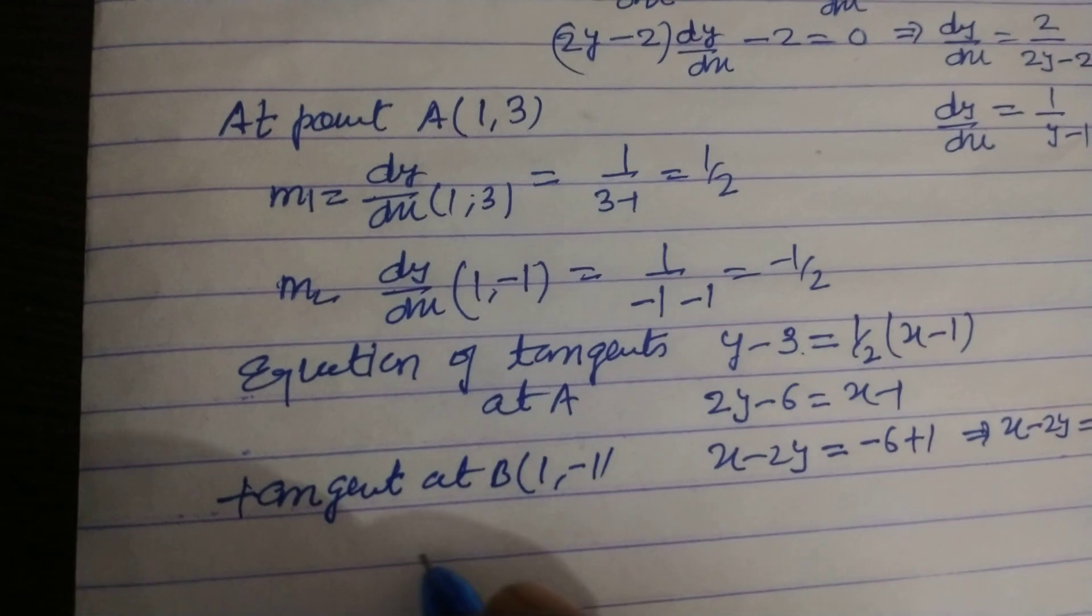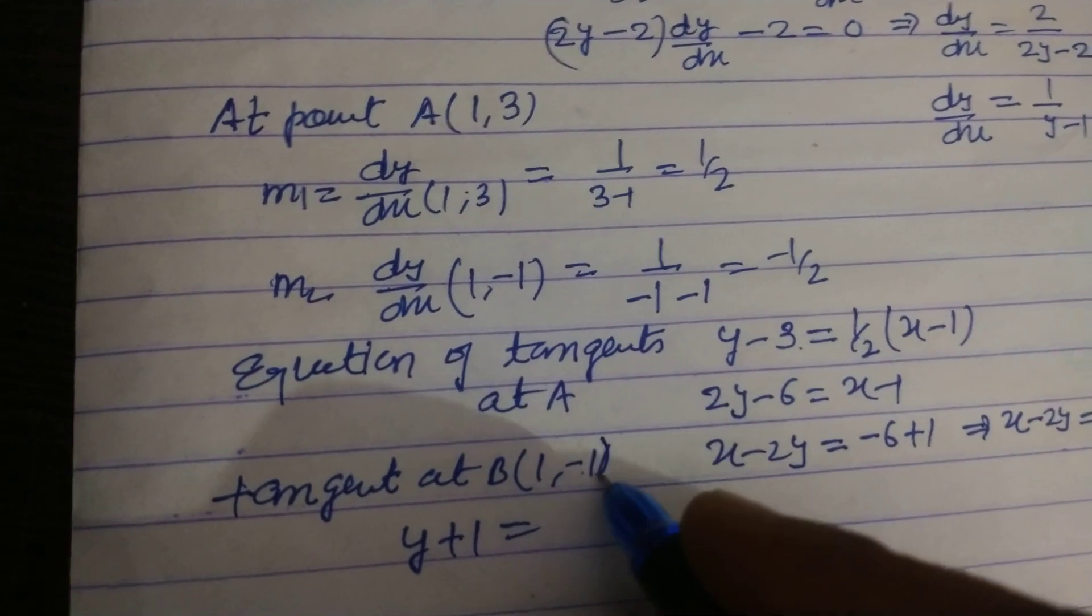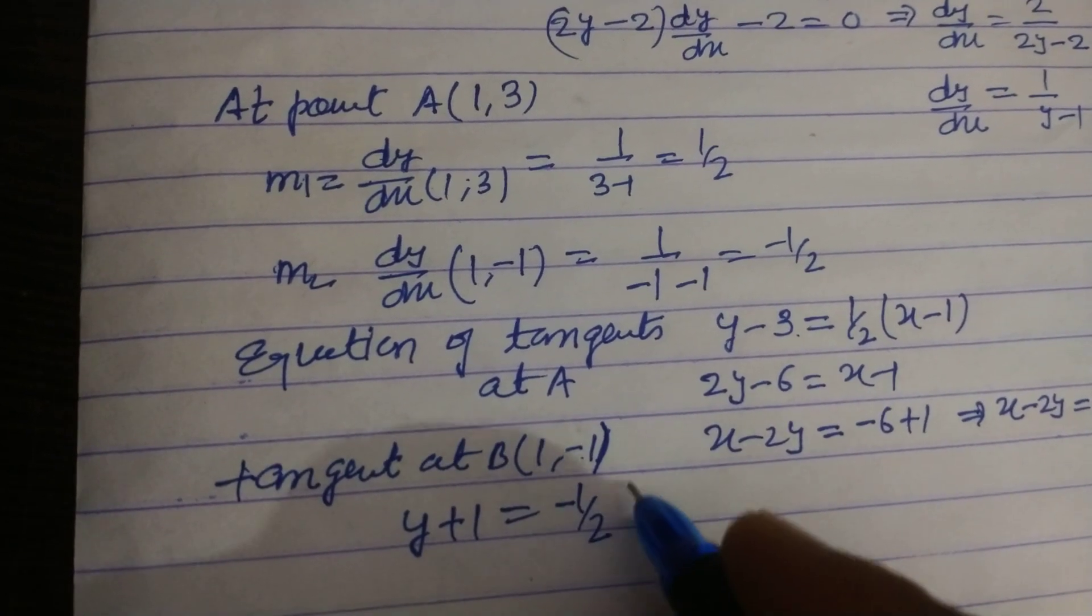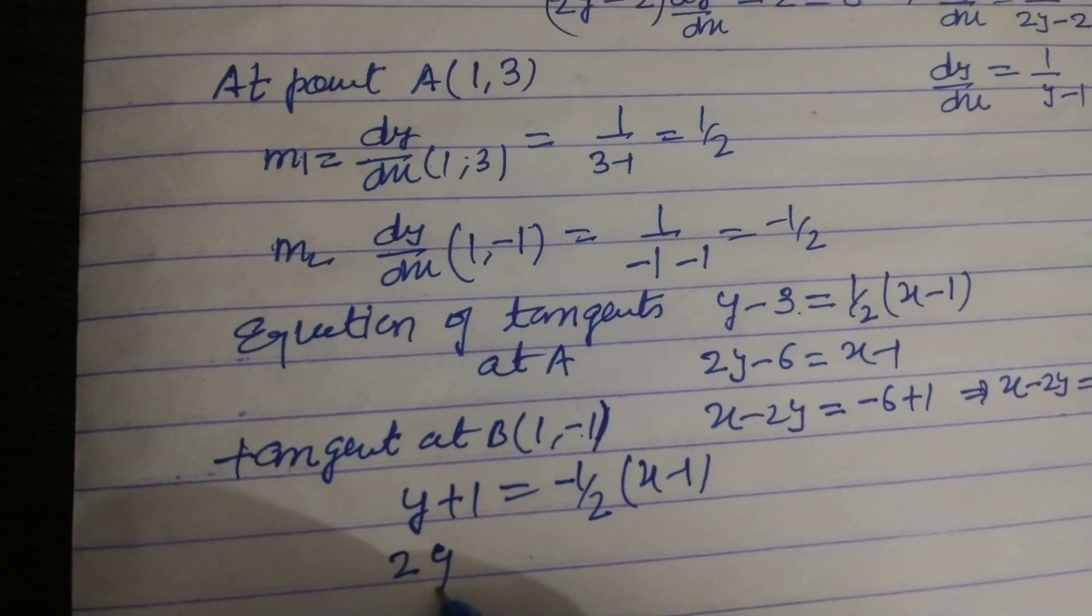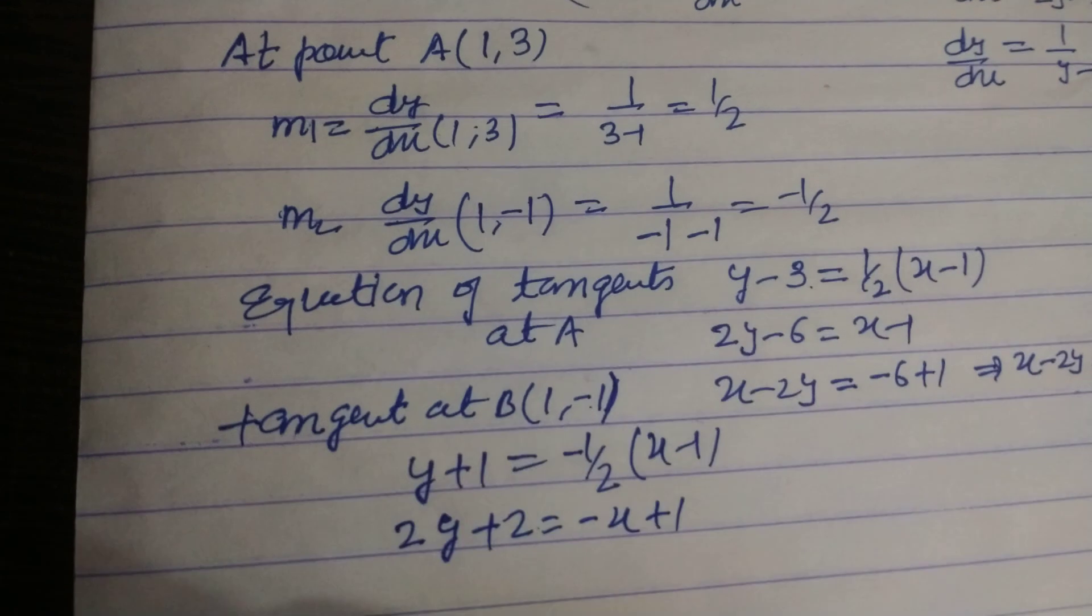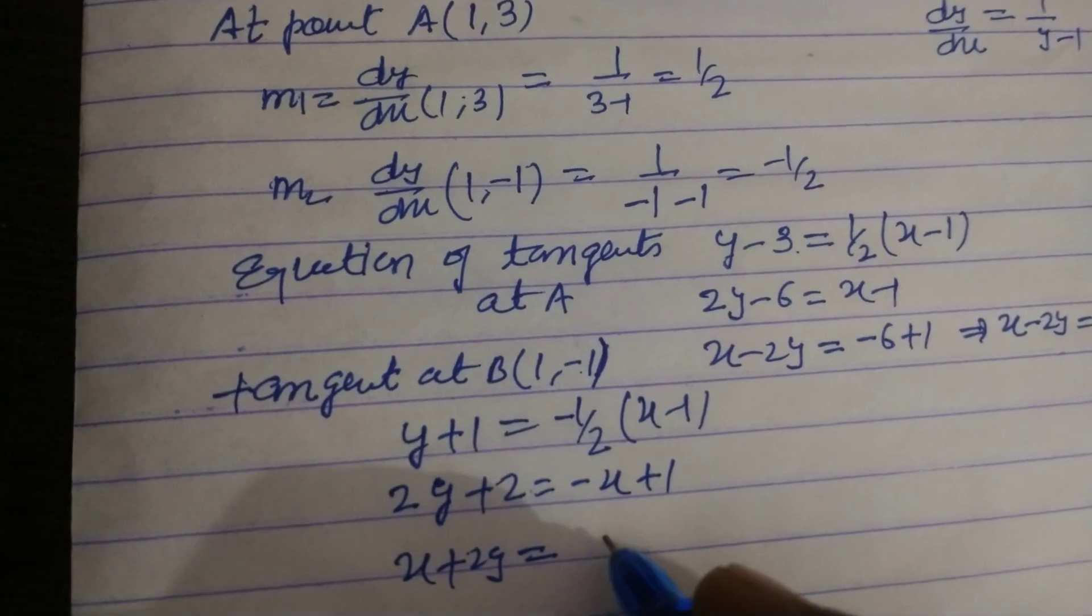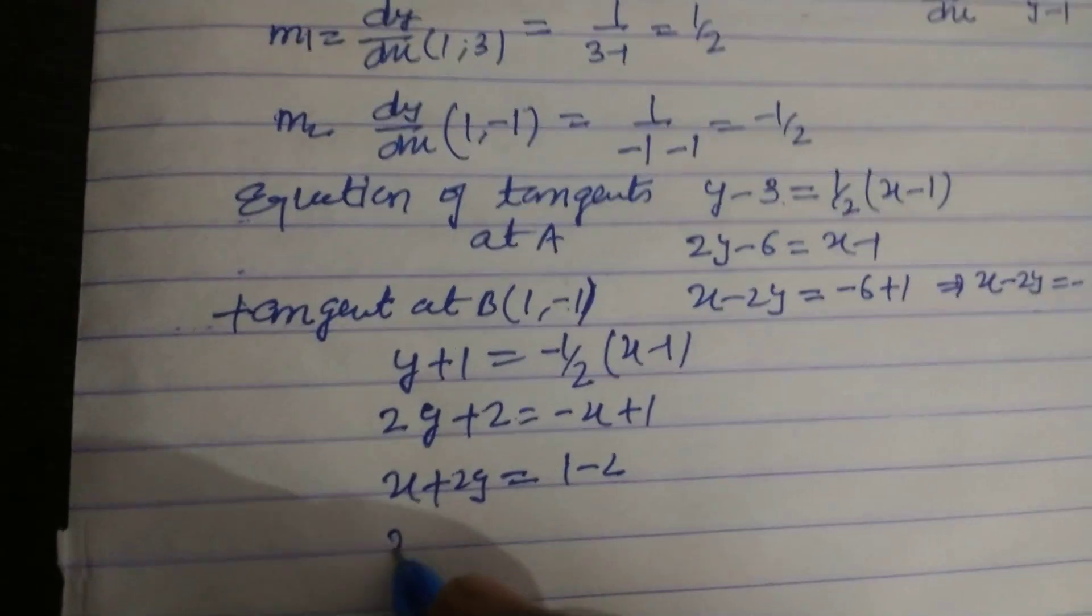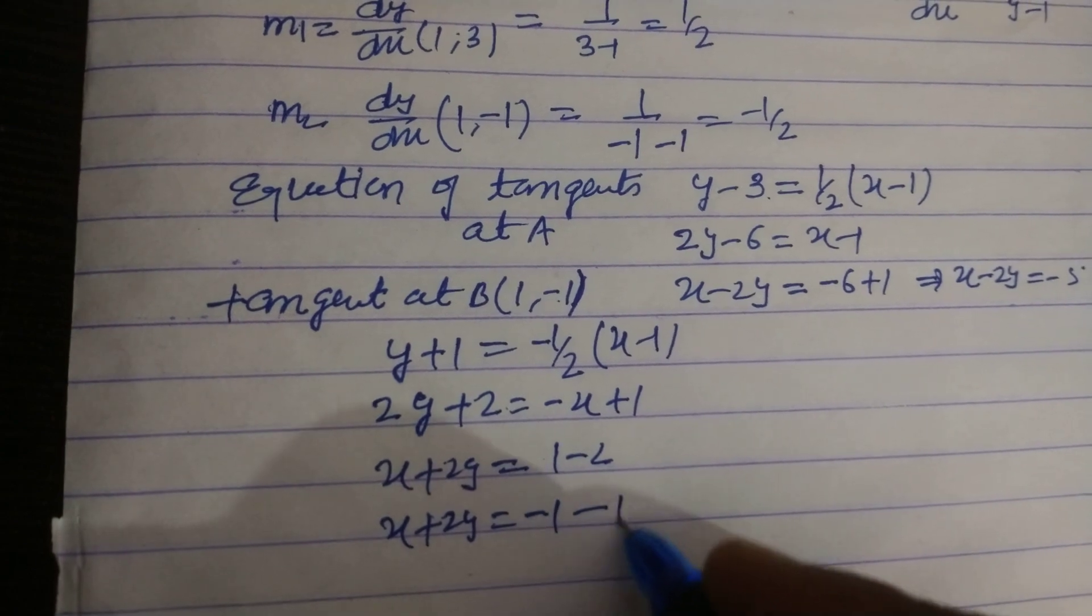Tangent at point B, which is (1,-1), so y - y₁, this is +1, m is -1/2, x - x₁. On solving this 2y + 2 = -x + 1, so x + 2y = -1, this is our second.